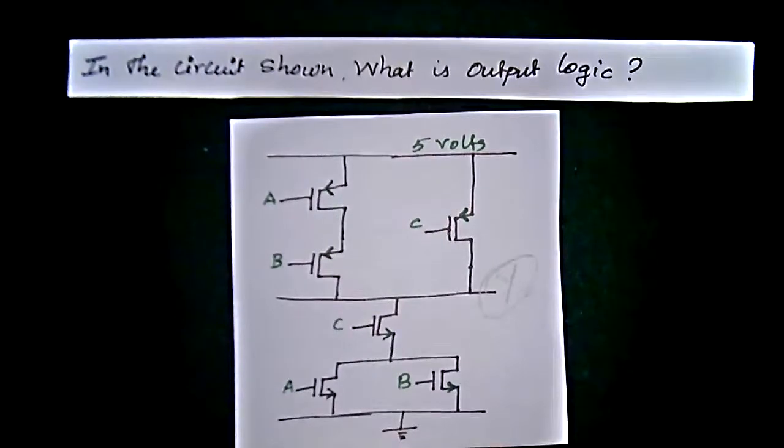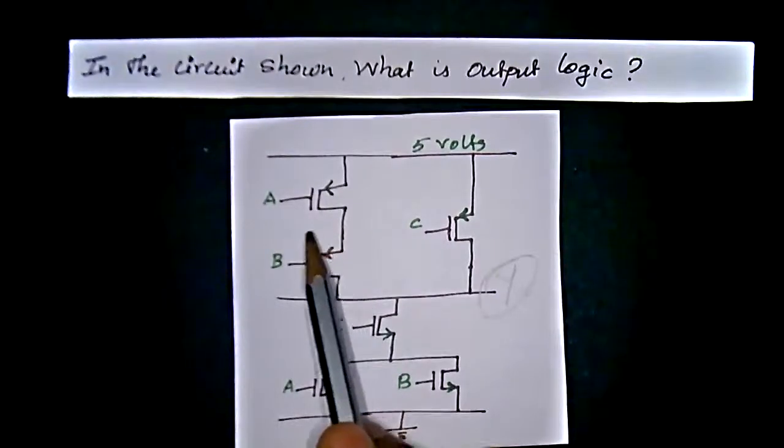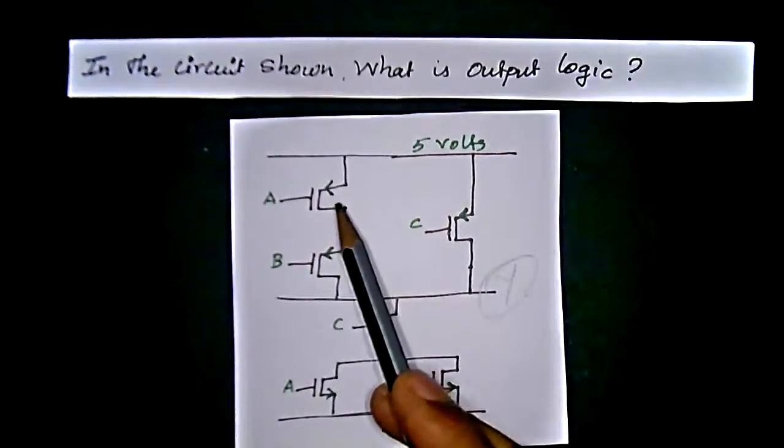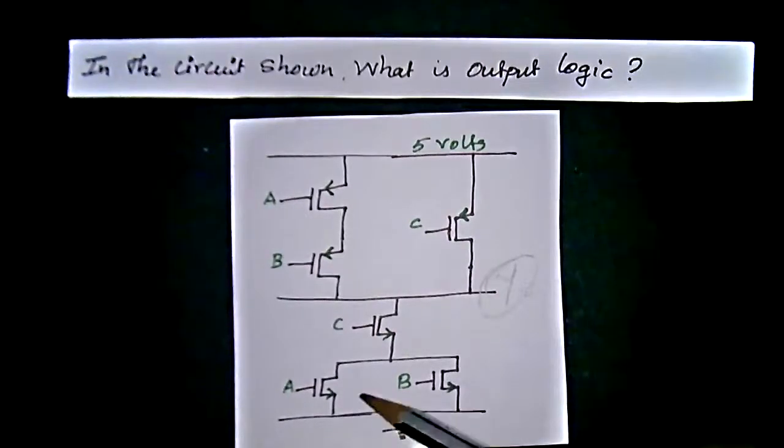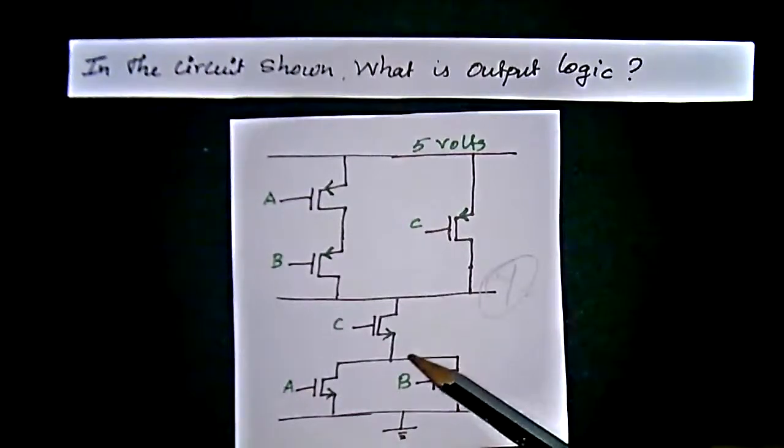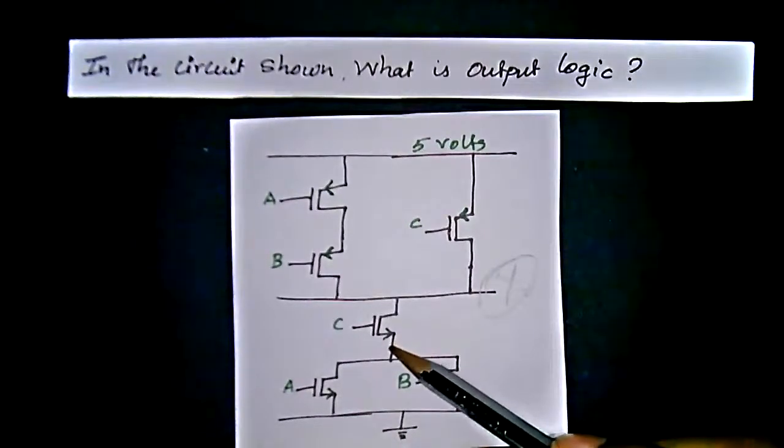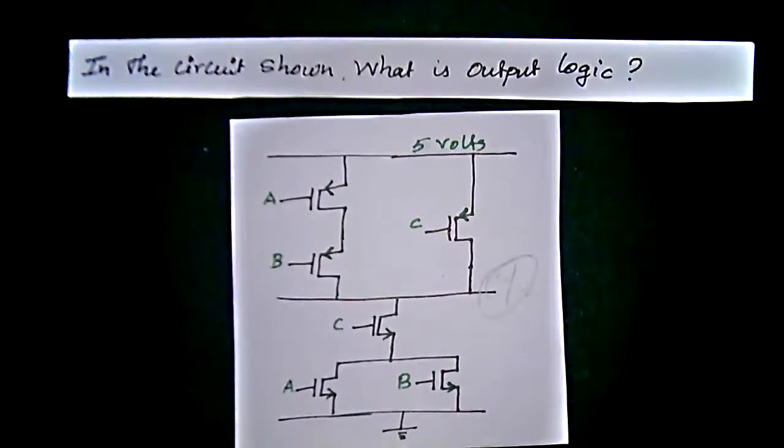In this circuit we have NMOS in the bottom of the circuit and PMOS in the upper part of the circuit. We have two different combinations, that is PMOS is connected in two types: in parallel connection and to a single C, that is input value C, in a series connection.